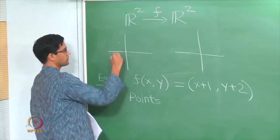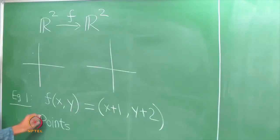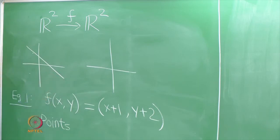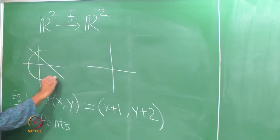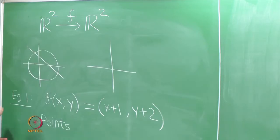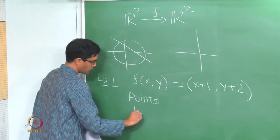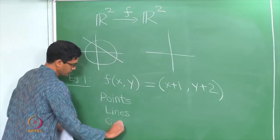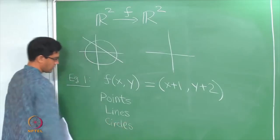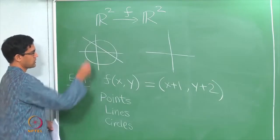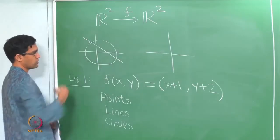R² has points — each of these is a point in R². Other subsets of R² of interest might be lines or more general curves. For instance, I could think of lines, circles, or more general curves like parabolas, ellipses, or even more arbitrary curves. Points are what we often call zero-dimensional objects, while lines and circles are one-dimensional.